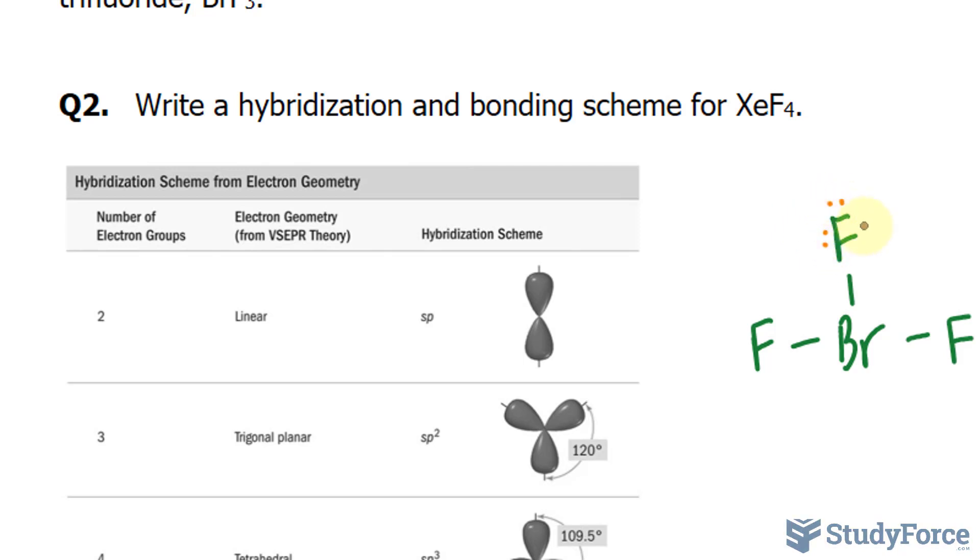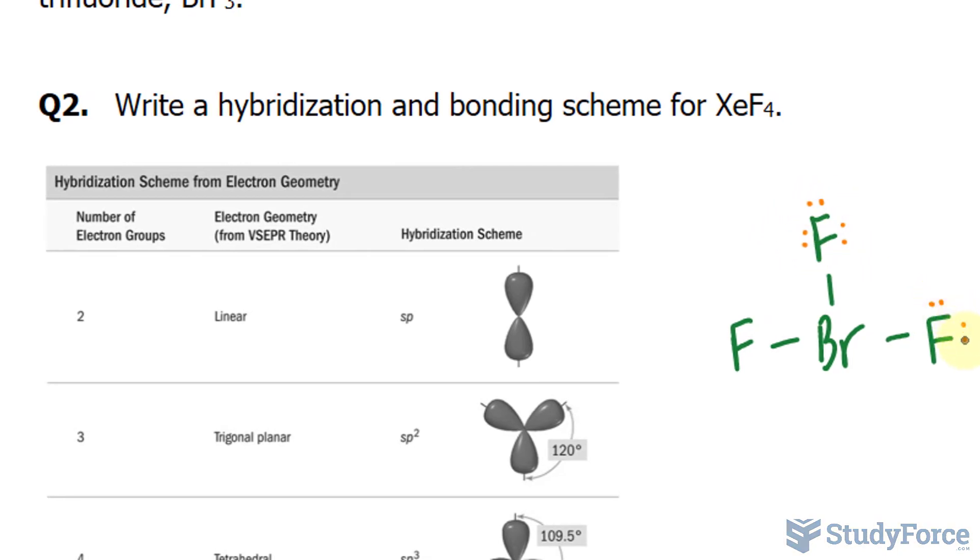And I will distribute those 22 electrons around the peripheral atoms first. That's 6 electrons on each fluorine for a total of 18, and the other 4 will be around bromine. Next, I'll calculate the bonding groups, and that is determined based on the central atom here. 3 bonding groups, and the central atom has 2 lone pairs.